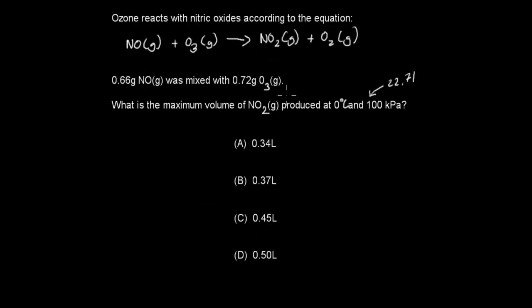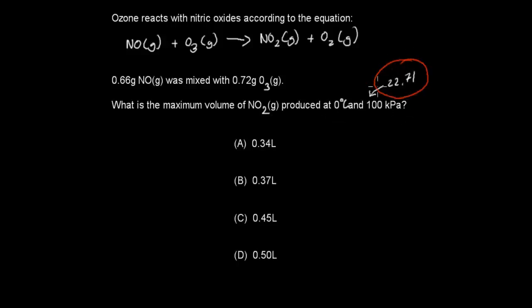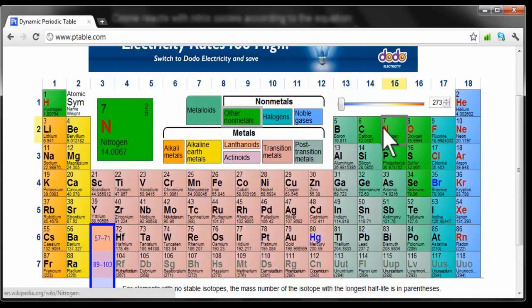Next question: ozone reacts with nitric oxide according to the equation NO + O3 → NO2 + O2. If 0.66 grams of nitric monoxide is mixed with 0.72 grams of ozone, what is the maximum volume of nitrogen dioxide produced at 0°C and 100 kPa? (Note: the molar volume at these conditions is 22.71 L/mol.)